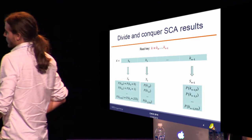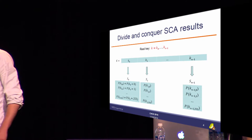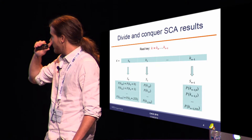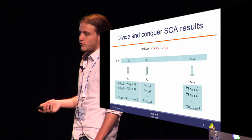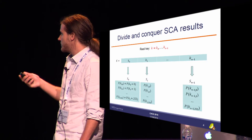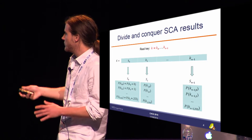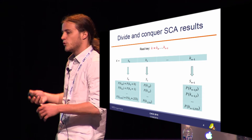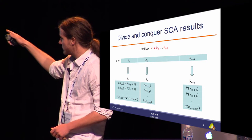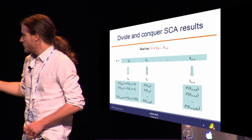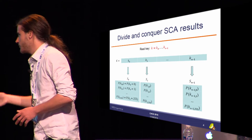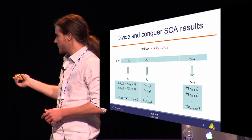Now let's say I want to attack the entire key, shown here in red. In the case of a block cipher, this key is divided into small independent parts called sub-keys — here I have n of them. I will do a divide-and-conquer attack: n independent attacks on each one of these sub-keys.